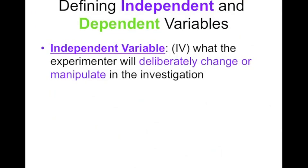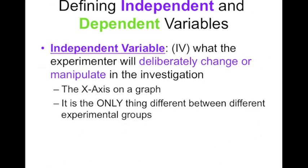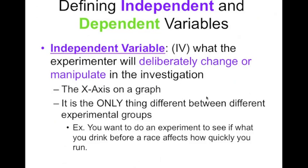Let's talk more about these IVs and DVs. An independent variable is what the experimenter is going to deliberately change or manipulate in an investigation. It's the x-axis on a graph, and it's the only thing that should be different between all the different groups that you're testing. It's the only thing we really want to change. For example, let's say we wanted to do an experiment to see if what you drink before running in a race affects how quickly you run. The independent variable is what we're deliberately changing or testing, so that would be what we're actually going to be drinking. The different drinks that runners have is what we would be actually testing and purposely changing.